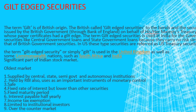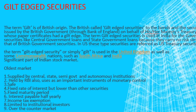To summarize the features of gilt-edged securities: it is one of the oldest markets with a significant place in the capital market. Supply is from central, state, semi-government, and autonomous institutions. The RBI has an important role. It is safe with a fixed but lower rate of interest; maturity period is fixed; interest is payable half-yearly; income tax exemption applies; and it is limited to institutional investors and is an over-the-counter market.